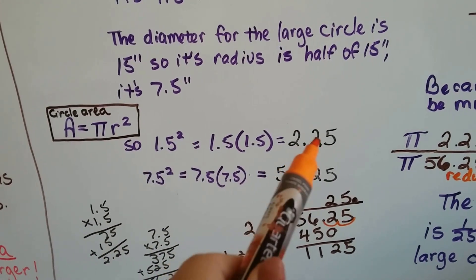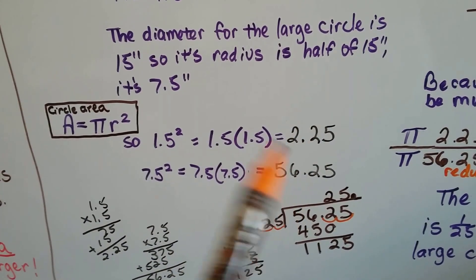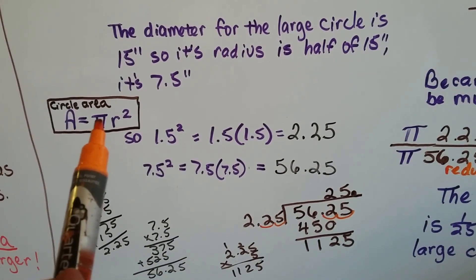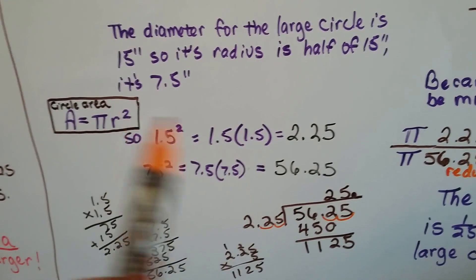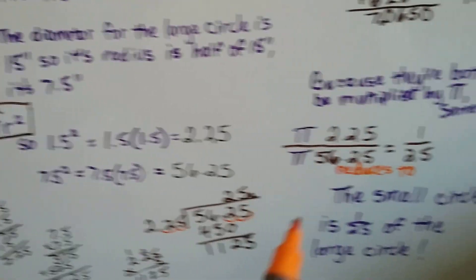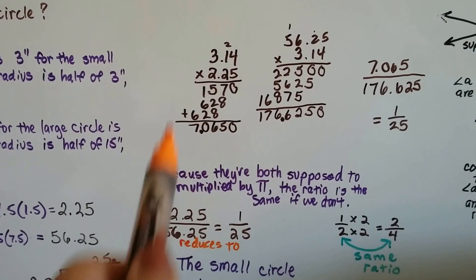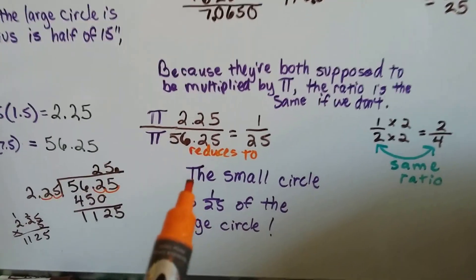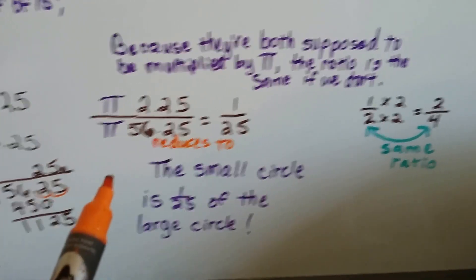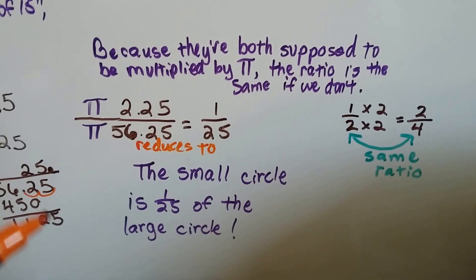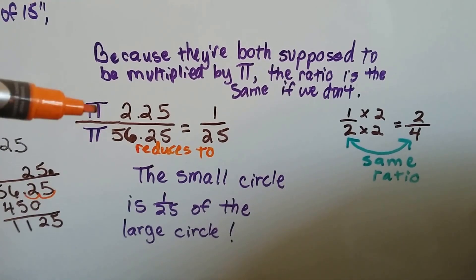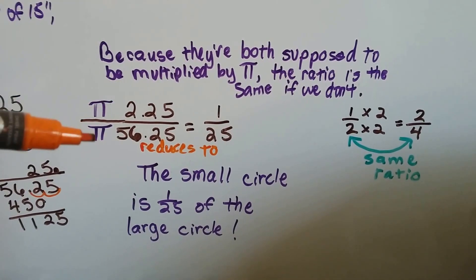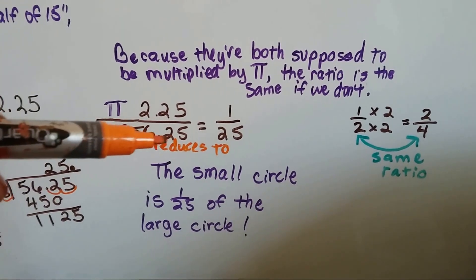So now, these two numbers are what we would need to multiply to pi, right? And then we'd find the area of each one, but we could go that route and do all that extra work, but because they're both supposed to be multiplied by pi, the ratio is the same if we don't.